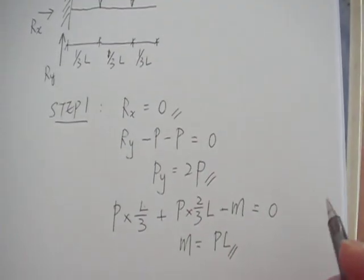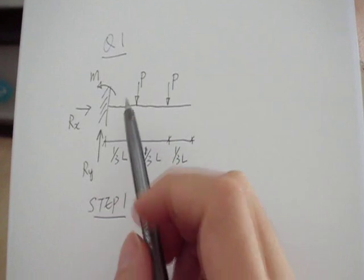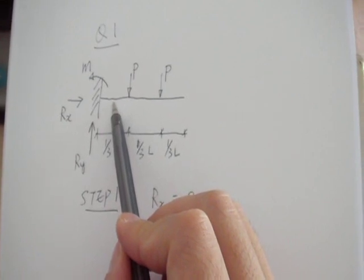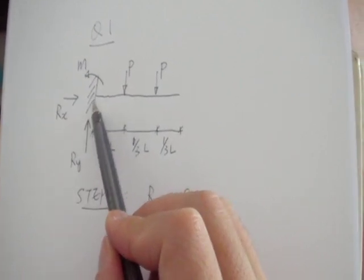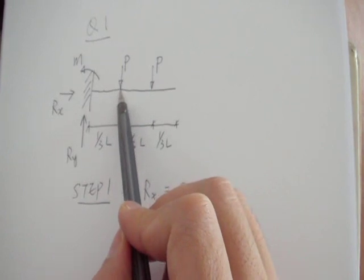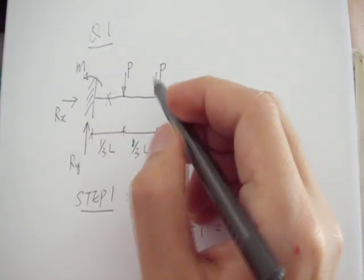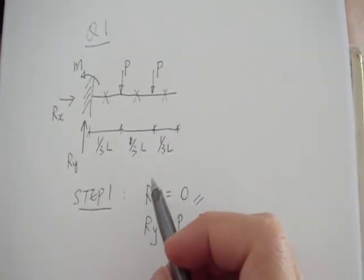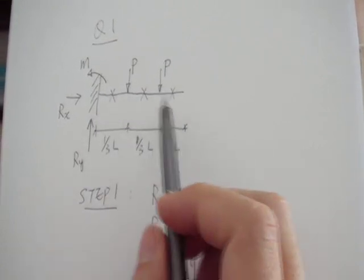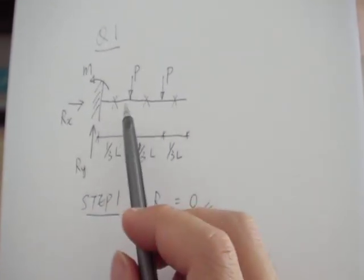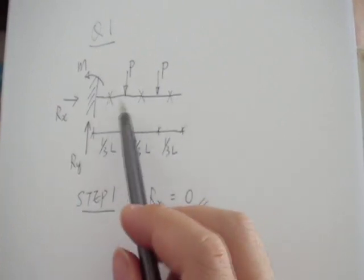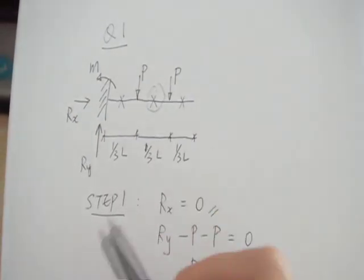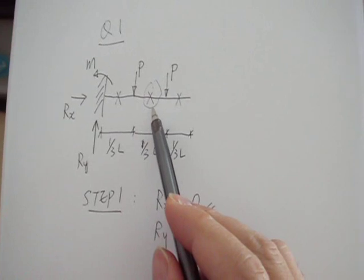So step one is done. In this question, you are asked to find the bending moment and shear force at this point — the middle between the left support and the first concentrated load — and also at the other marked points. In this video, I'll just demonstrate how to calculate the bending moment and shear force at the midspan of the beam.